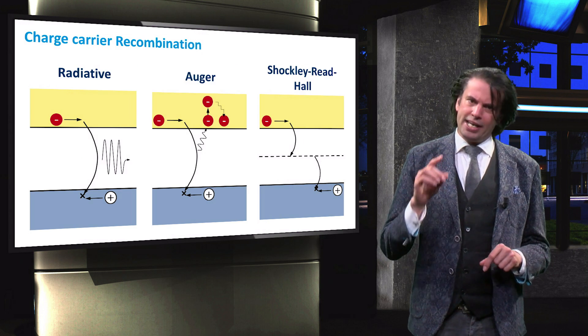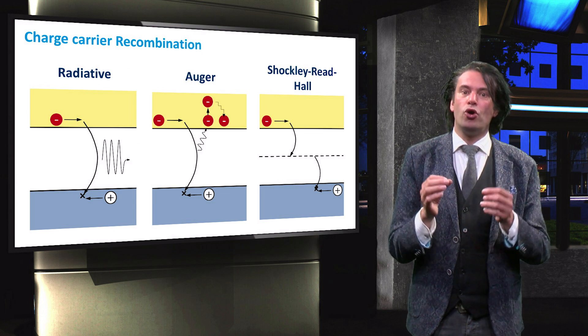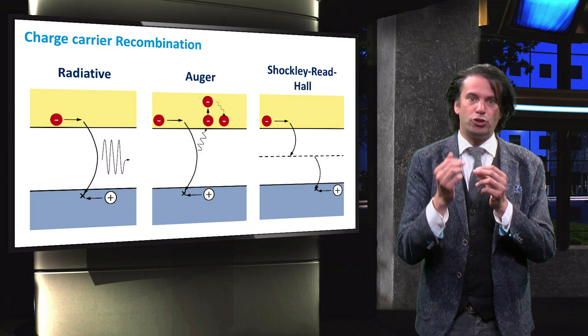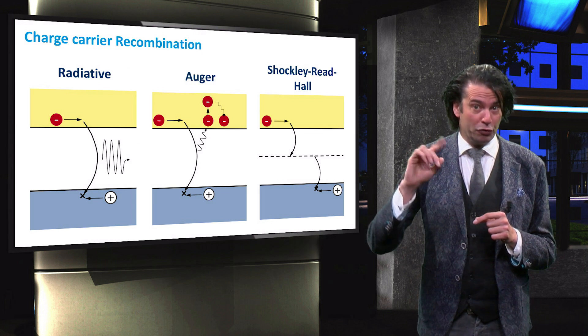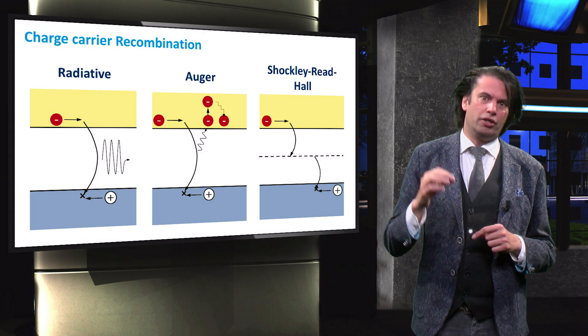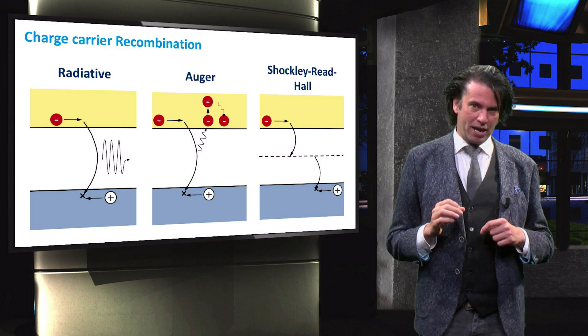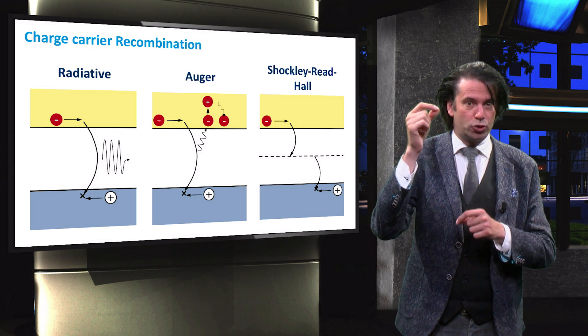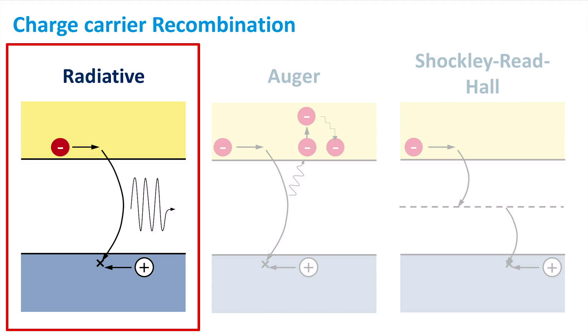So, in a direct band gap material, an electron only requires a change in energy to be excited. The reverse is also true: an excited electron in a direct band gap material does not require a change in momentum to recombine. The dominant recombination mechanism is therefore radiative recombination.